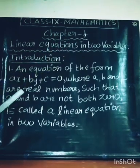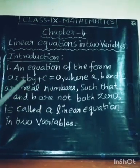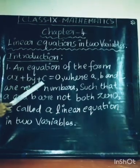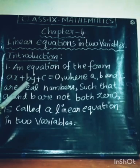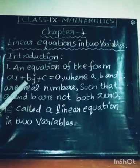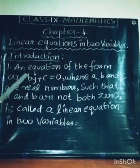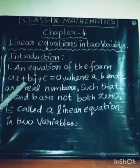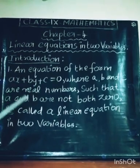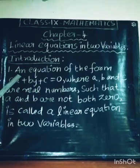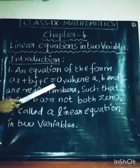So the Linear Equation in 2 Variables has the general form: AX plus BY plus C equal to 0. Here A, B, and C are real numbers. One more condition: A and B are not both 0 — that is, A is not 0 and B is not 0. This general form is the standard form of a linear equation.